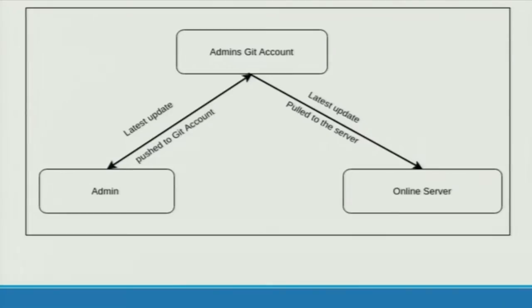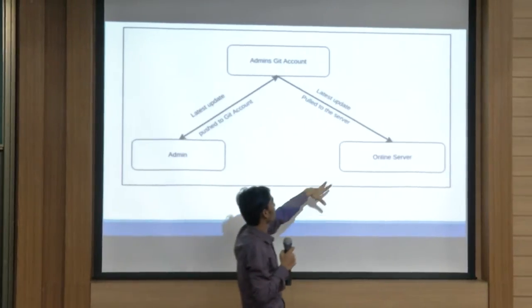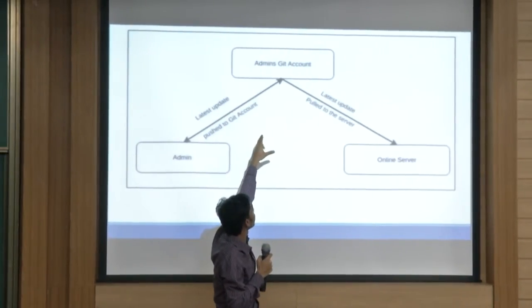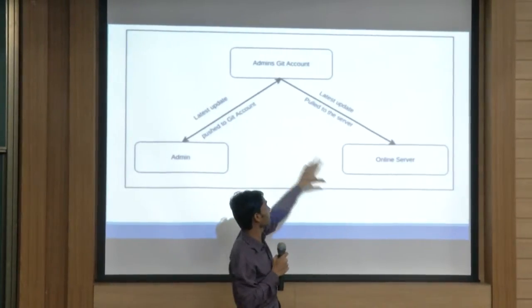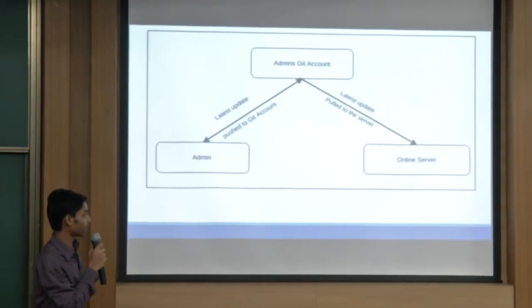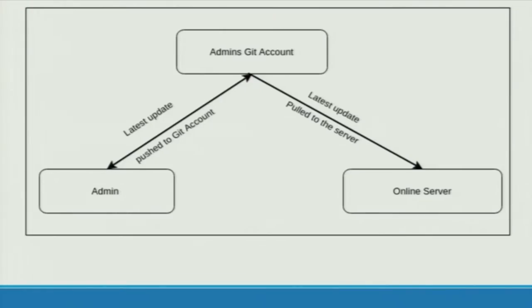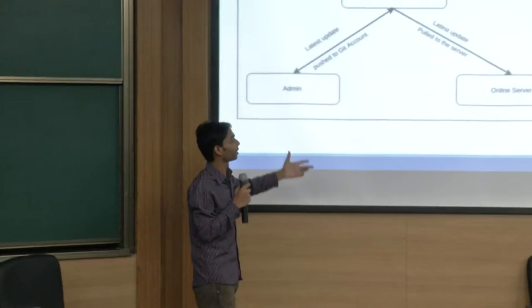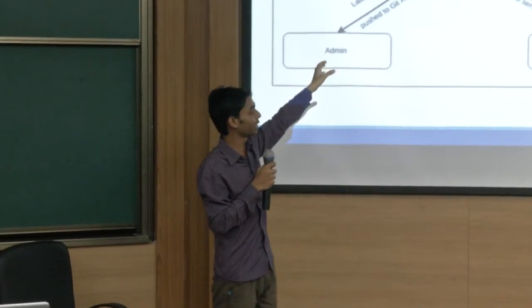The main problem was that we have some Scilab codes. When updating a Scilab code from the admin account, we need to push that updated code to the online server, and that was not working properly. The part that pulls the updated code to the online server was failing because there was no proper internet access to that part of the server. We have now given internet access to the server, so it is working properly.